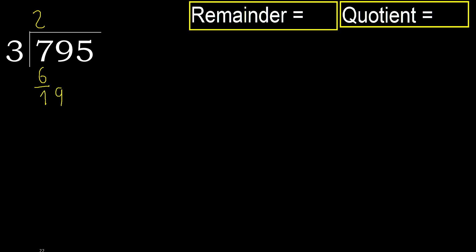19. 3 multiplied by 7 is 21, which is greater. 3 multiplied by 6 is 18, which is not greater. Subtract.